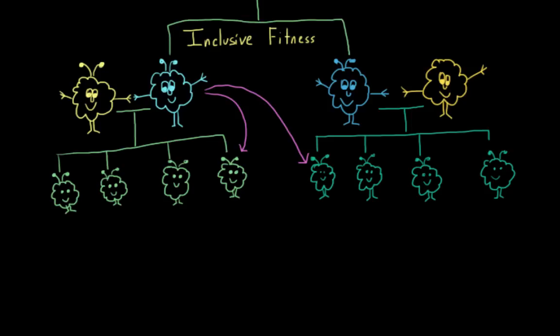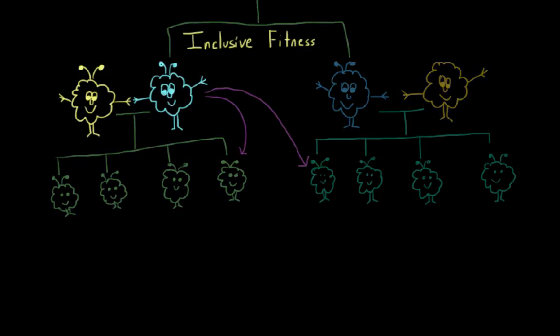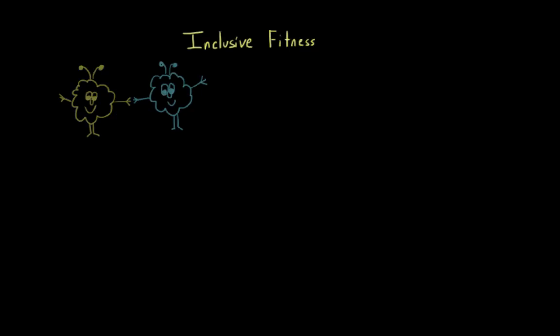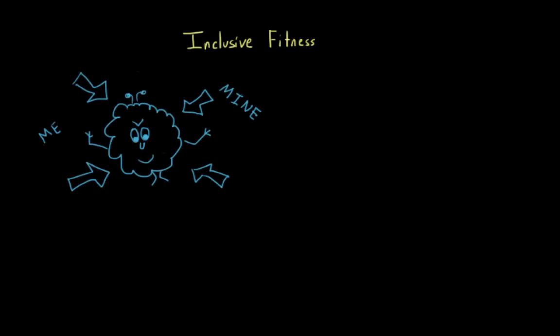And I think that this concept can help us solve some of the problems that people tend to have with evolution. When people talk about evolution, they tend to focus on things like survival of the fittest. Which, if taken literally, would predict that animals, including humans, might be predisposed to act selfishly. To do whatever would be necessary to live the longest and reproduce the most.